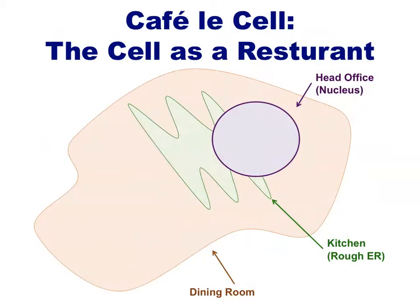To understand the flow of information in the cell and the purpose of this information, it's helpful to think of the cell as a sort of restaurant. The nucleus, where we find DNA, is like the head office. The rough endoplasmic reticulum, which contains molecular machines known as ribosomes, is like the kitchen, and the rest of the cell is somewhat like the dining room, where the patrons are served the finished products.